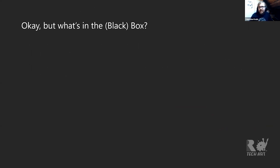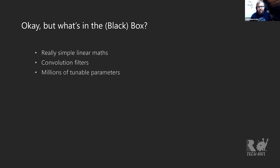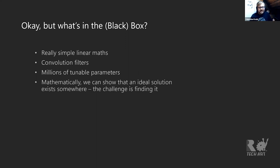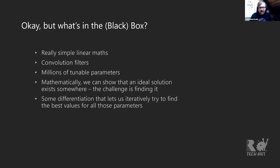So what's going on in the black box: really simple linear math, convolutional filters, millions of tunable parameters. The ideal solution exists somewhere — we know there's enough computation in principle to achieve the output; the challenge is just finding the right combination of values. We use differentiation to iteratively find the best value for all parameters, and at the end we get really good image results.